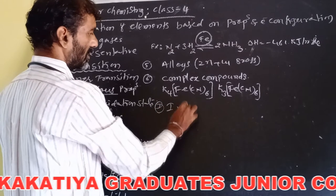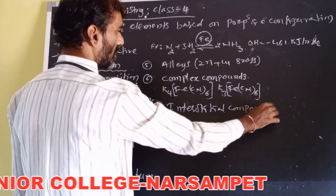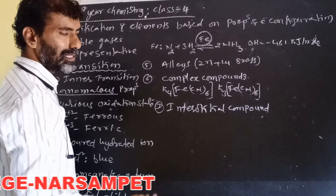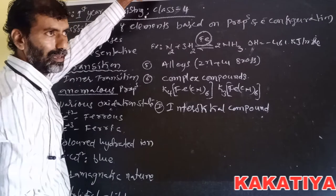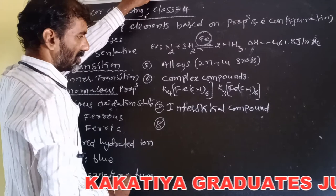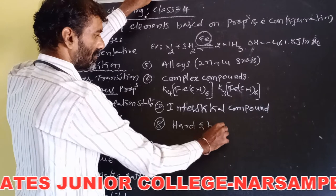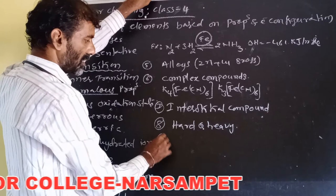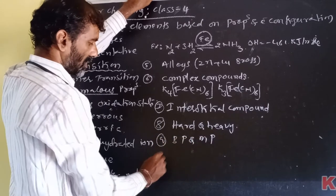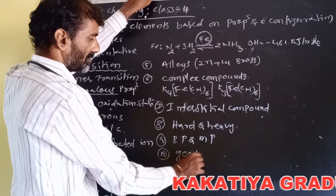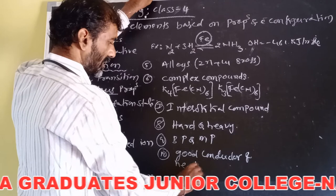Next is the formation of interstitial compounds. Non-metals are immersed into the holes within the metal lattice; these are called interstitial compounds. Transition elements are also hard and heavy metals, with high boiling points and melting points.